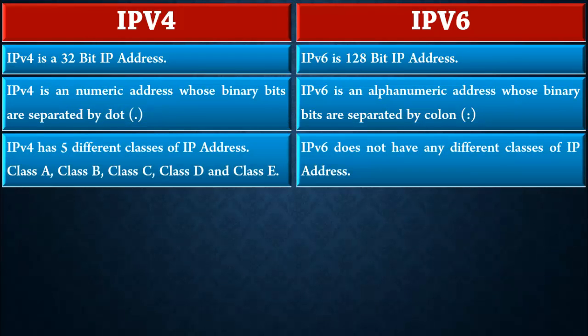IPv4 has five different classes of IP address — that is class A, class B, class C, class D, and class E — whereas IPv6 does not have any different classes of IP address.